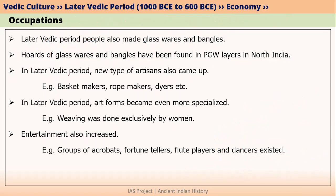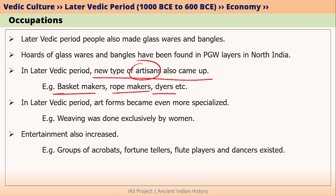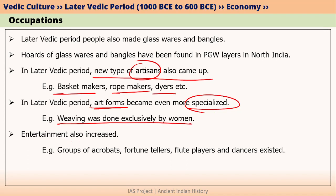In the later Vedic period, new types of artisans also came up. Artisan simply means people involved in artistic works. For example, basket making, rope making, and dyeing of cloth were done. Moreover, these art forms also became more specialized. For example, weaving was done exclusively by women — men were not doing weaving during the later Vedic period. This means that art forms were more specialized.